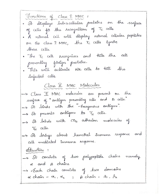The TC cell recognizes and kills the cell presenting foreign proteins. This will activate NK cells to kill the infected cells. Coming to Class 2 MHC molecules: these molecules are present on the surface of antigen presenting cells and B cells. They bind with exogenous antigens, present antigens to TH cells, and bind with the CD4 adhesion molecules of TH cells.